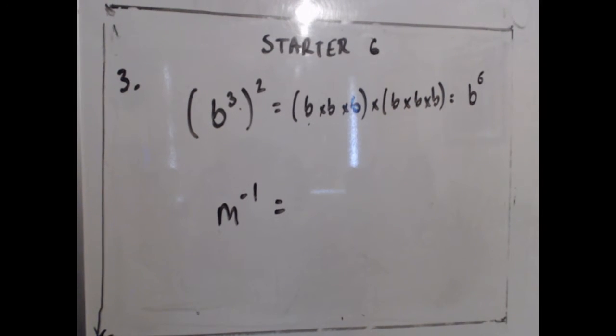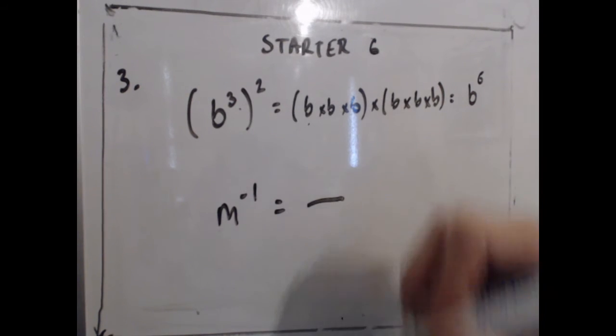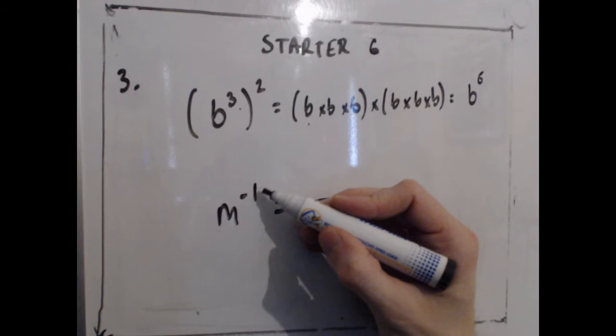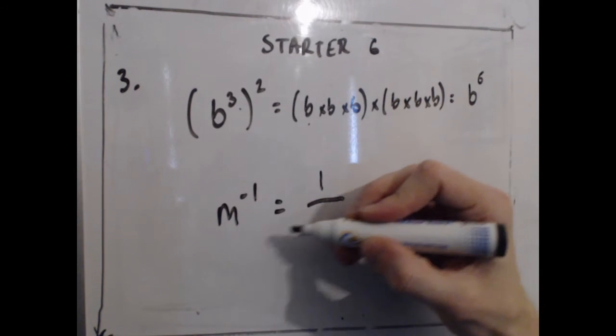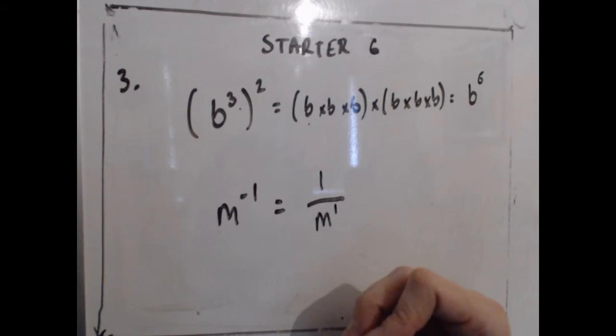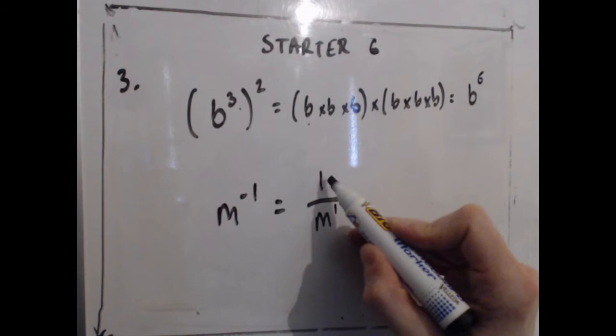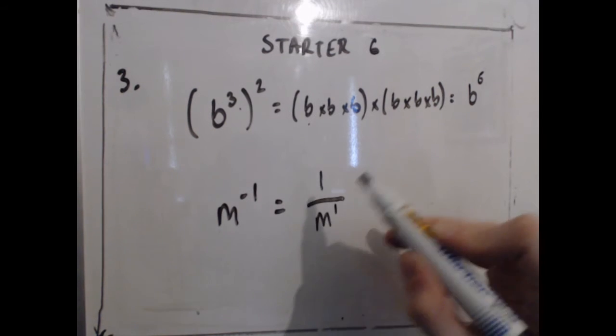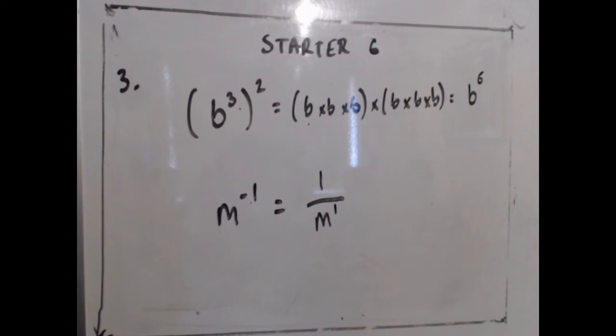And then the second one is a negative indices problem. Now what it wants you to do is to convert this into a fraction. Now m to the power of minus anything is the same as 1 over m to the power of its positive number. So if this was minus 2, m to the power of minus 2 would equal 1 over m to the power of 2, but as it's minus 1 we just express it as 1 over m to the power of 1.